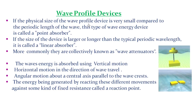Wave profile devices: if the physical size of the wave profile device is very small compared to the periodic wavelength of the wave, this type is called a point absorber. If the size of the device is larger or longer than the typical periodic wavelength, it is called a linear absorber. These are more commonly collectively known as wave alternators.